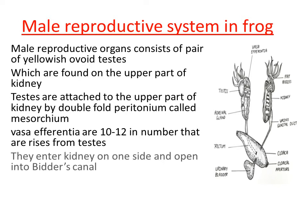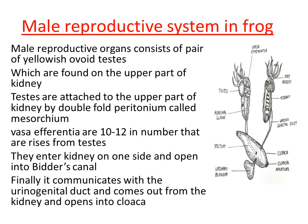The vasa efferentia get connected with the urinogenital duct, and when connected, they pass through a common canal called Bider's canal. Bider's canal is not shown in the diagram because it would make the diagram very complex. When the vasa efferentia comes out from the testes, it passes through Bider's canal and gets connected with the urinogenital duct.